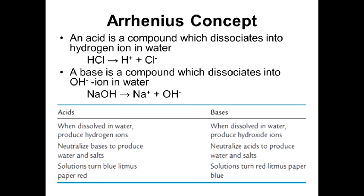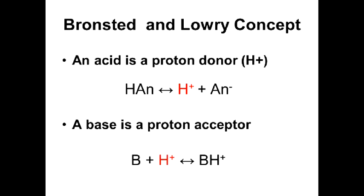Acid-base equilibrium. The Arrhenius concept states that acids are compounds which form hydrogen ions during dissociation and bases form OH⁻ ions. The Brønsted-Lowry concept states that acids are donors of protons whereas bases are acceptors of protons.